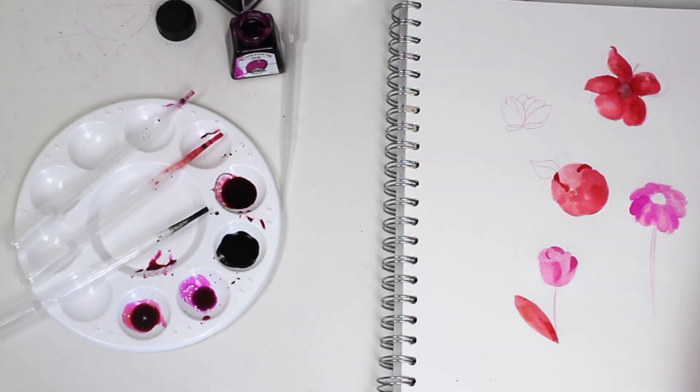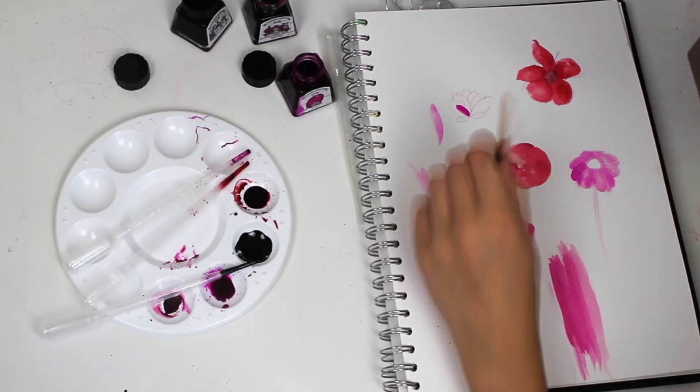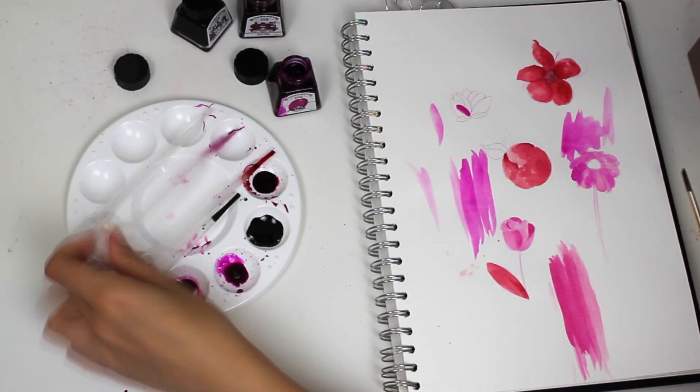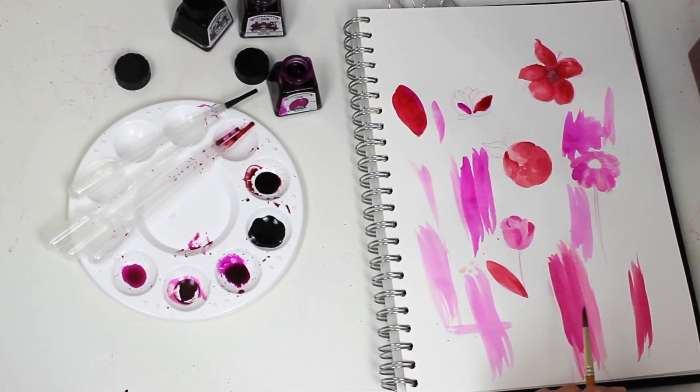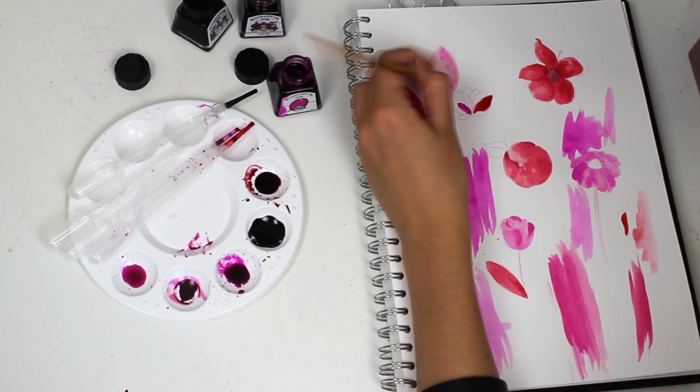If anyone's wondering, I am using the William collection pack of Winsor & Newton inks. They come in a pack of eight different inks and I think there's two different collections you can buy, and then you can also buy the individual colors as well.